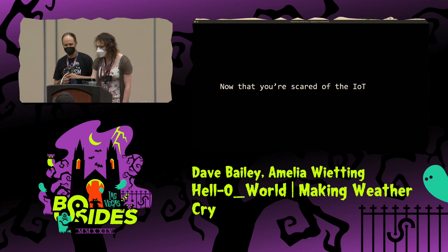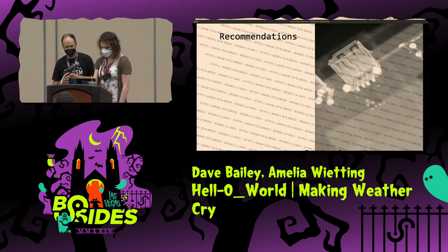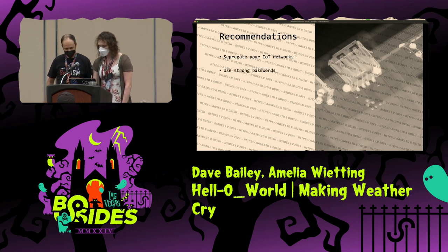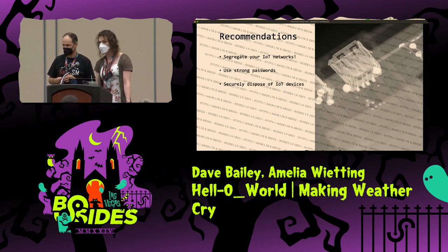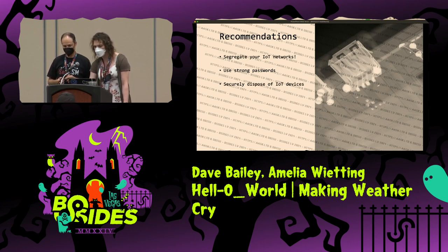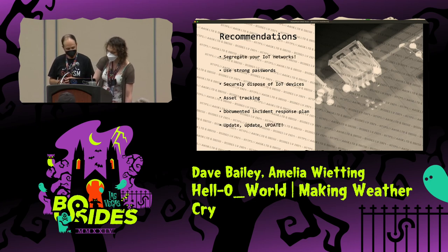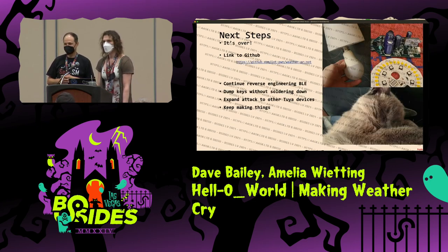Now that you're scared of IoT, here are our recommendations: Segregate your IoT networks — follow the FBI's recommendation to physically segregate them, not just a VLAN. Use strong passwords and securely dispose of your IoT devices. If someone goes through your garbage and grabs one of these, there goes your IoT network password. If you're a business, track your assets, have a documented incident response plan, and make sure you update, update, update — unless you have a specific Samsung washer, then don't.